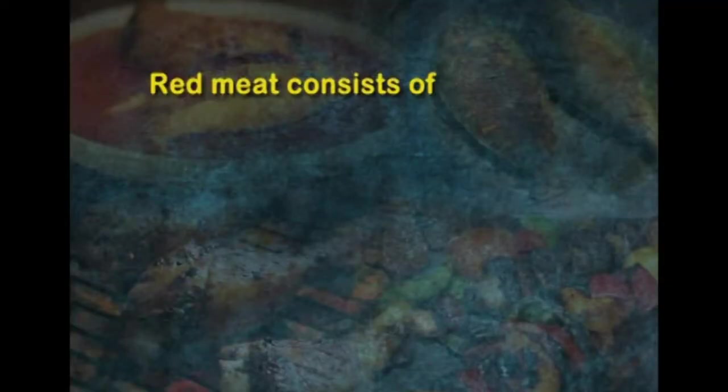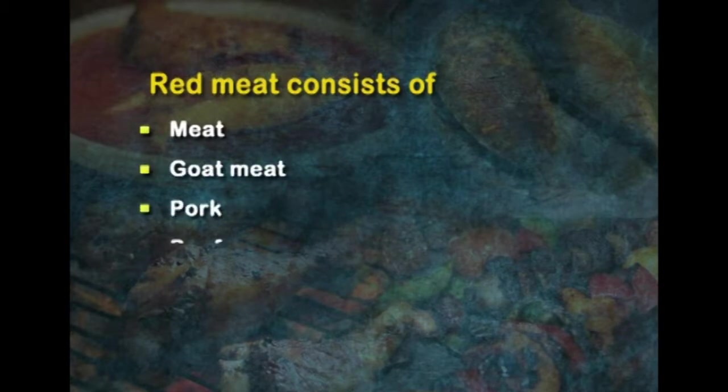Red meat consists of goat meat, pork, beef and rabbit meat. White meat, which comes mostly from poultry, is considered better than red meat for health reasons.